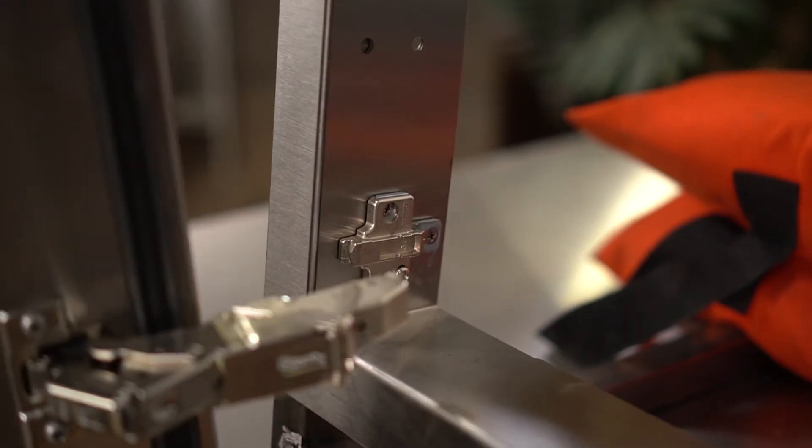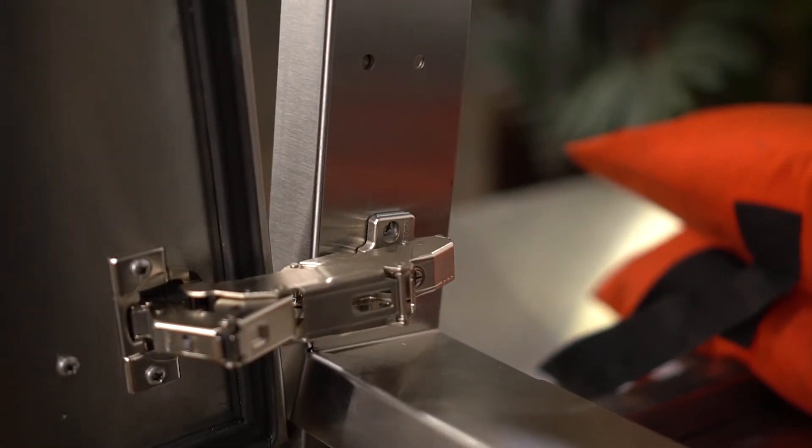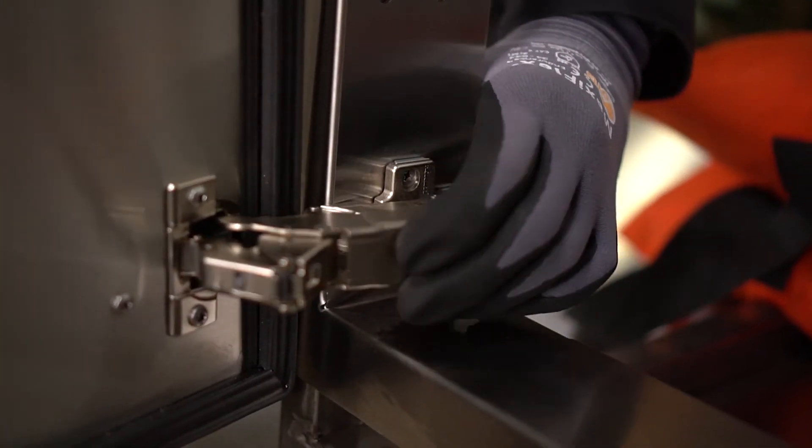For Madera doors, place the bottom hinge over the mounting bracket, and then clip it in. Repeat this for the top hinge.